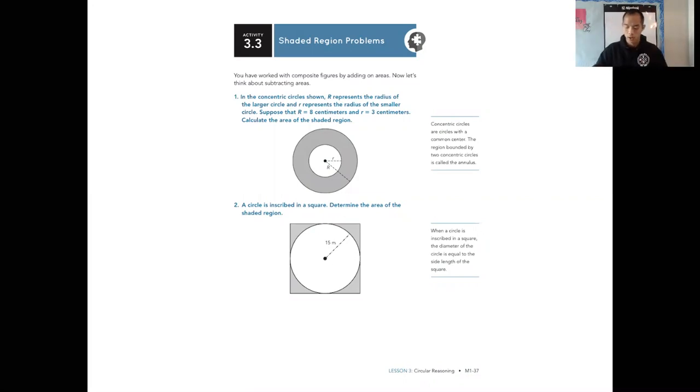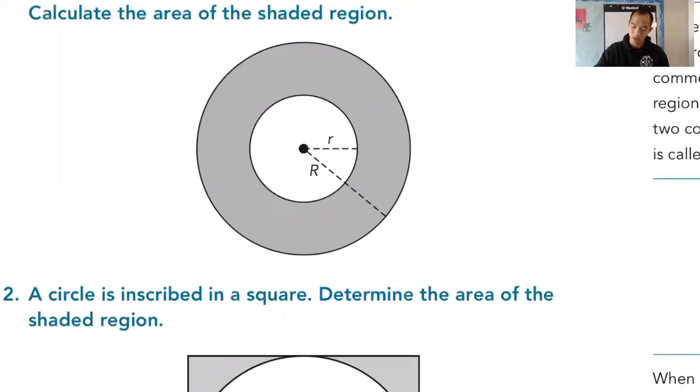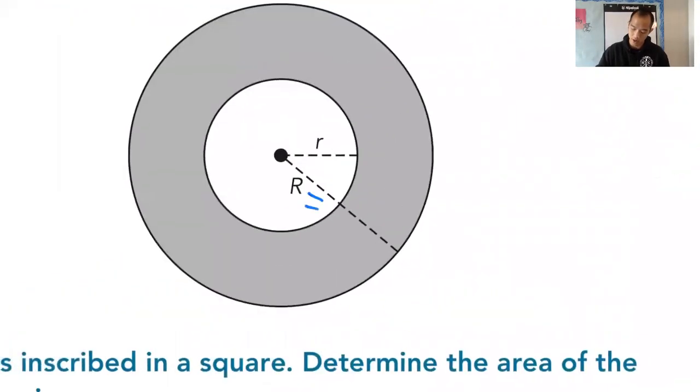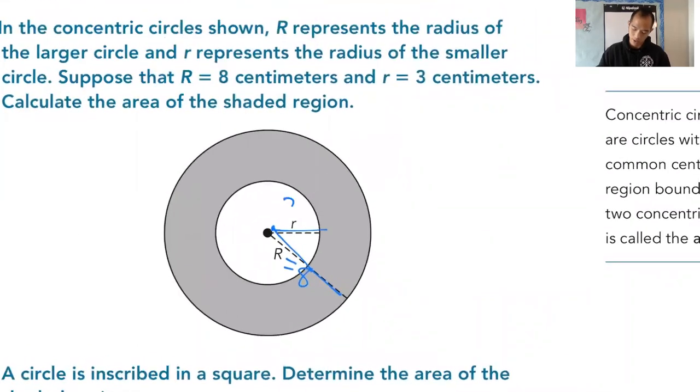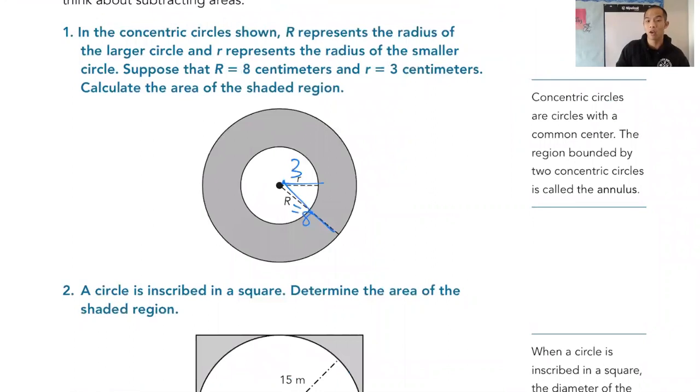Now remember for this problem right here, it tells us in the question that the radius here is 8, the longer radius, and the smaller radius is 3. So whenever we have a thing like this, first we're going to take the area of the whole thing. Now keep in mind they only want the area of the shaded region.